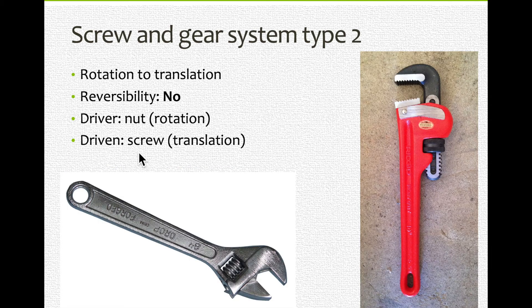Quite frankly, I don't think it's the biggest deal if you see an object and you're not sure if it's system one or system two. What you have to remember is that it's not reversible and it's always rotation to translation. So if we look at these tools, we're going to be turning this part over here. So rotation. And it's going to make this open up. So there's a translation.